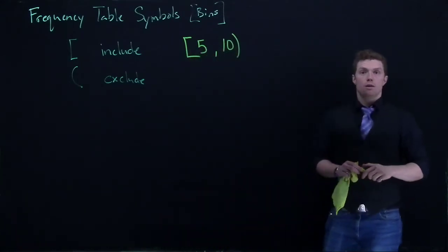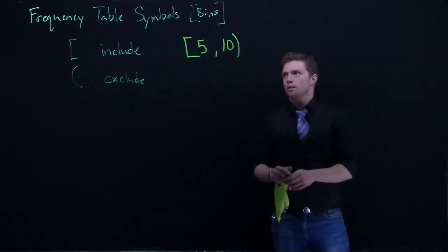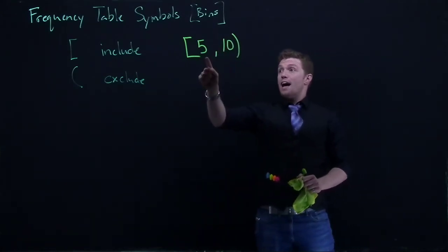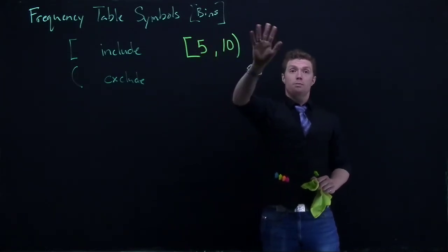Okay, so this bin would then contain any values from our survey that we're doing, maybe this is free throws or whatever, where we would include five, six, seven, eight, and nine. All those numbers would be in this bin and we count them.